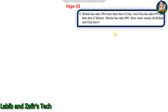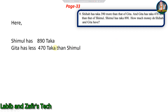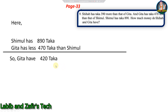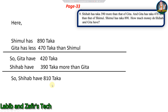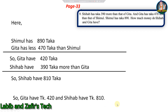Another question: She has taka 390 more than Gita, and Gita has taka 470 less than Shimul. Shimul has taka 890. How much money do She and Gita have? Shimul has 890 taka. Gita has 470 less than Shimul: 890 minus 470 = 420 taka. She has 390 more than Gita: 420 plus 390 = 810 taka. Answer: Gita has taka 420 and She has taka 810.